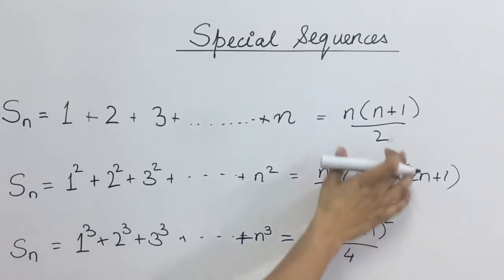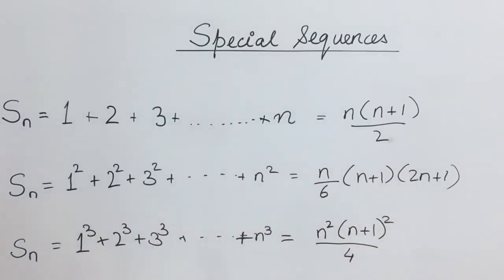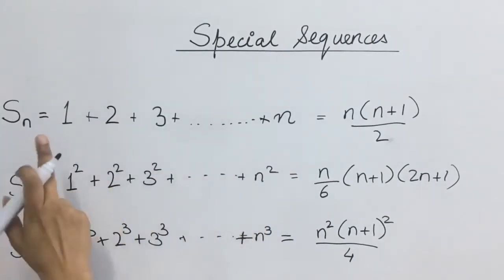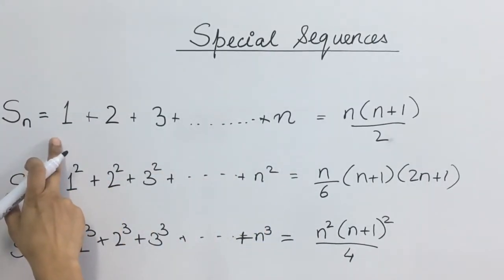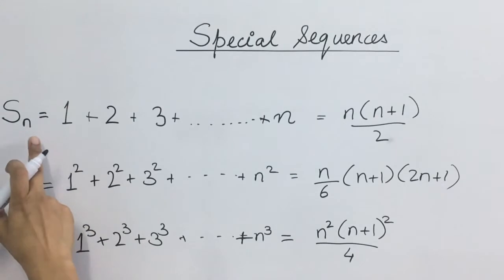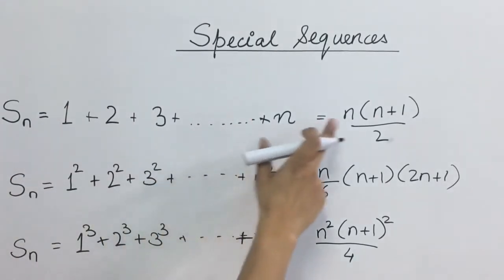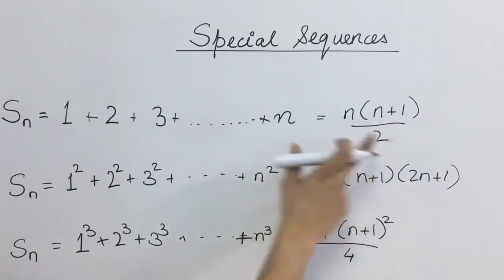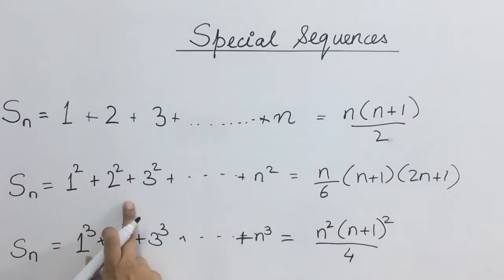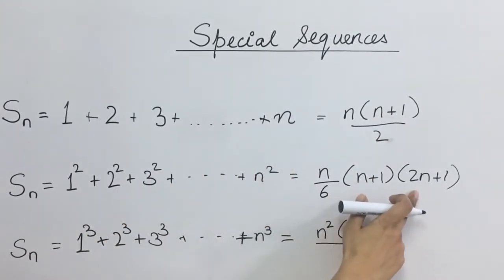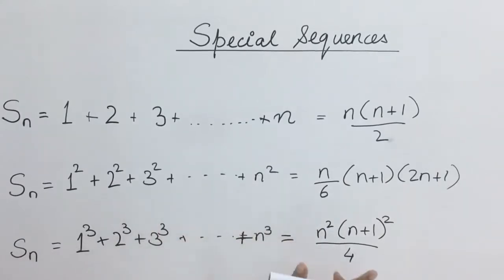This is same as the first case. Toh humare paas 3 cases kya hain? First, sum of first n natural numbers from 1 to n, this value will be equal to n into n plus 1 by 2. Square ka n by 6 into n plus 1 into 2n plus 1. Aur cube ka ye case rahega.